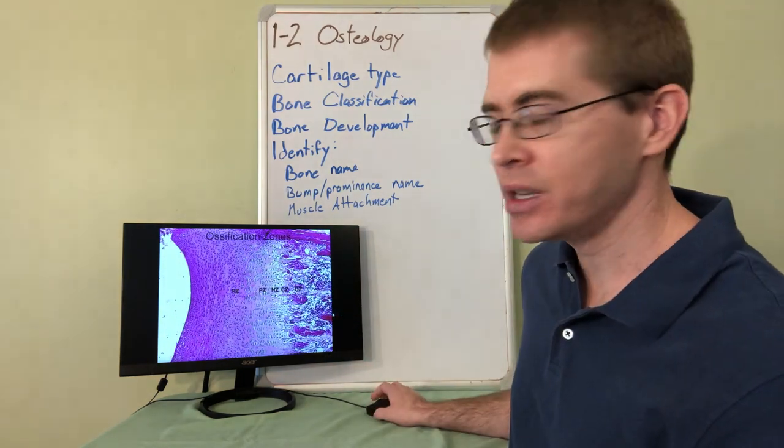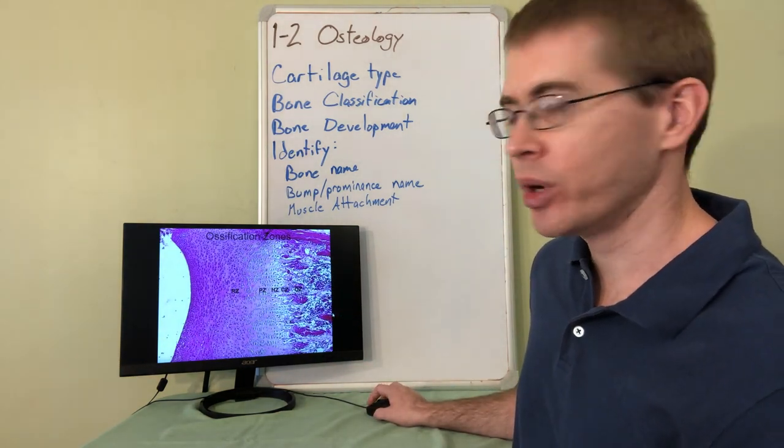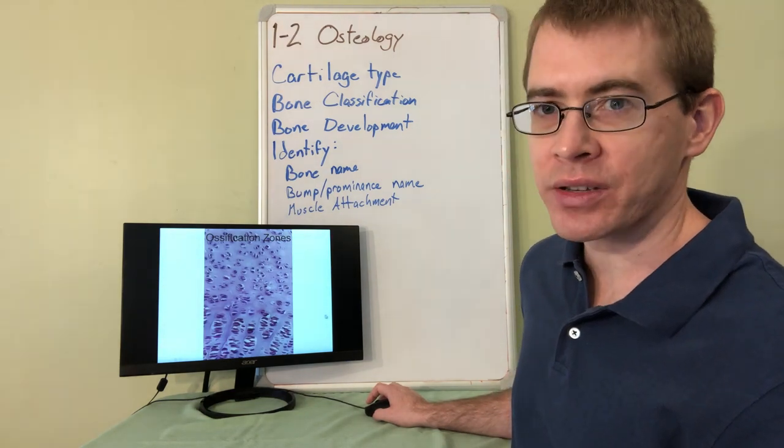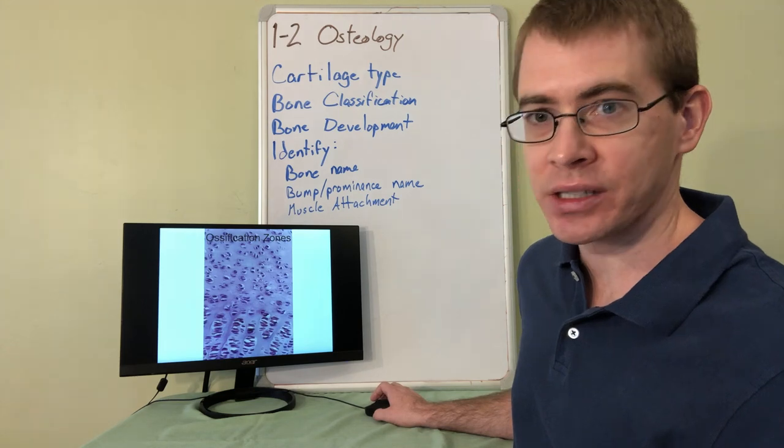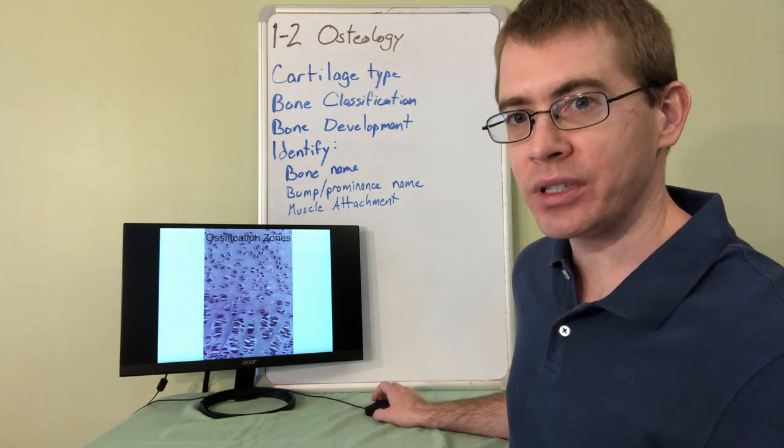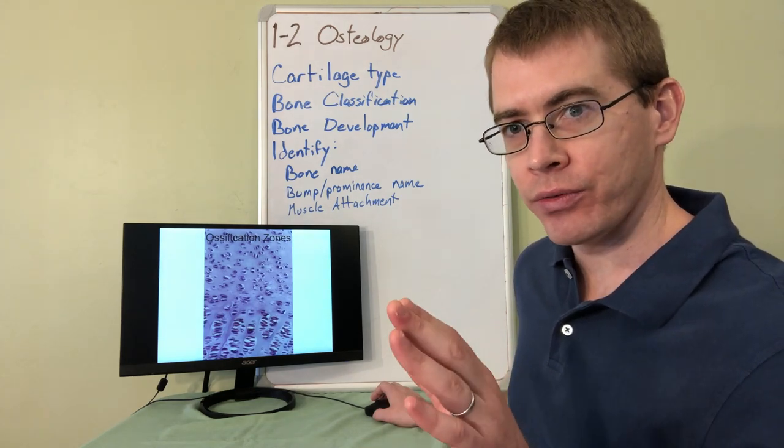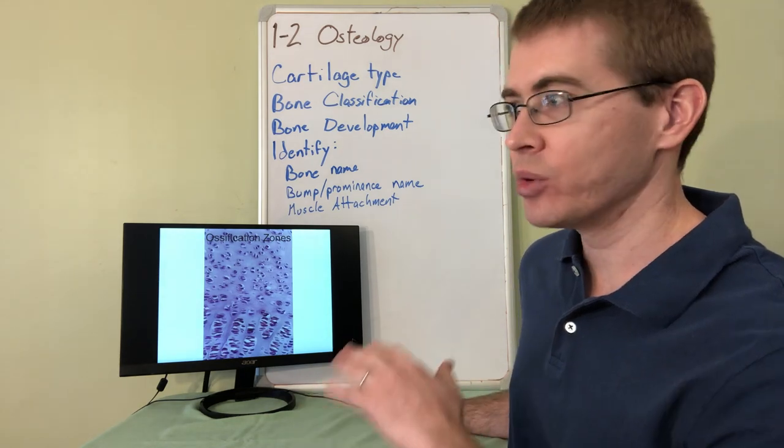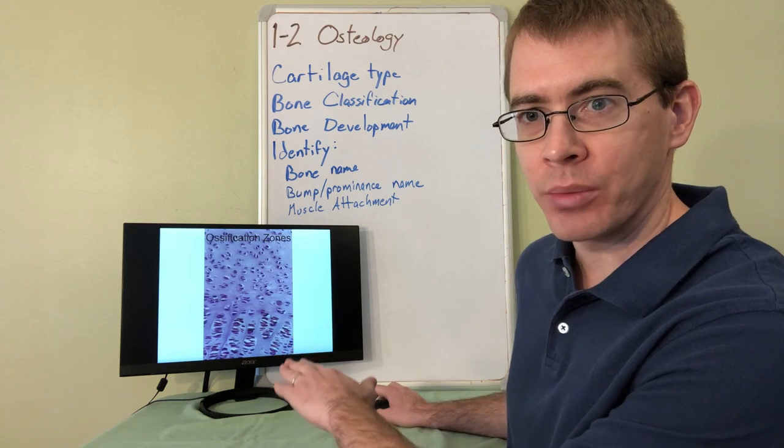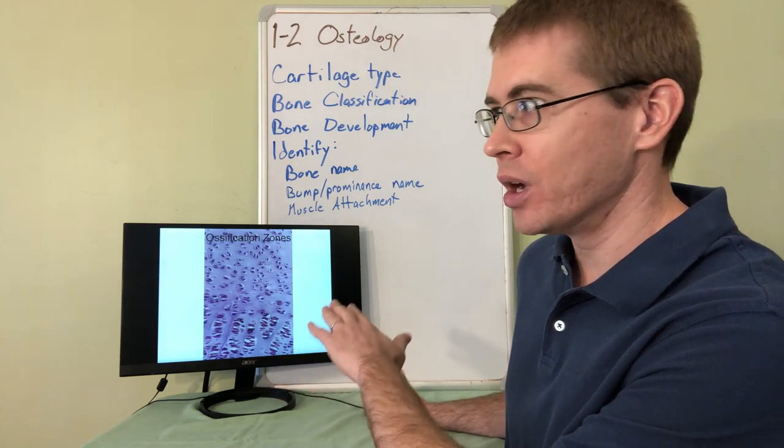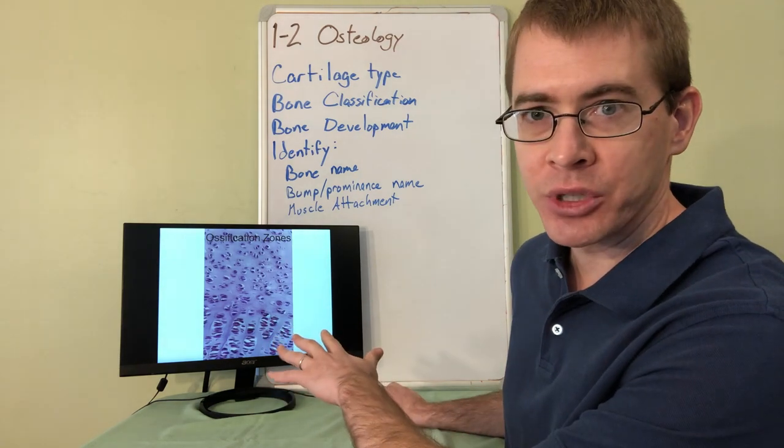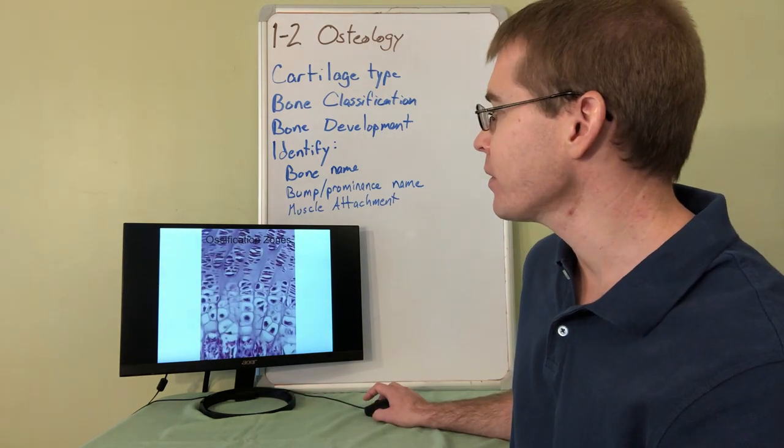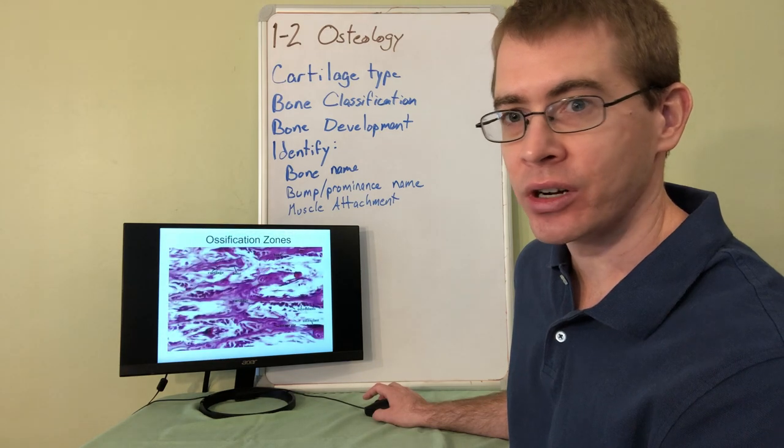So under a microscope you can see those different regions. You can take a quick look at these slides. Now normally in this course you may hear from past students that we look under the microscope in these histology portions. Because of the time constraints for this semester under these circumstances, I'm not going to ask you to identify images from a microscope. These kinds of images will not be on a test, we will not be looking under microscopes.